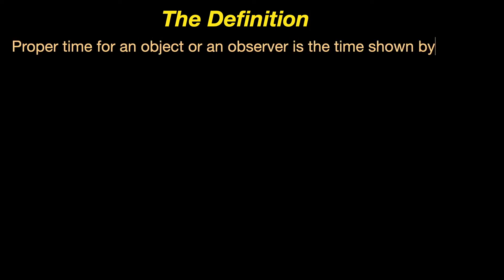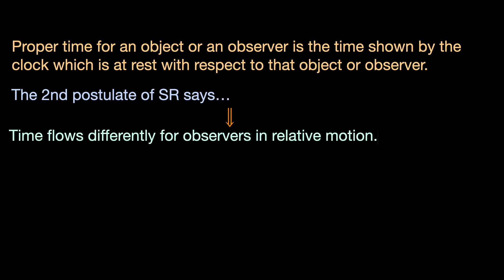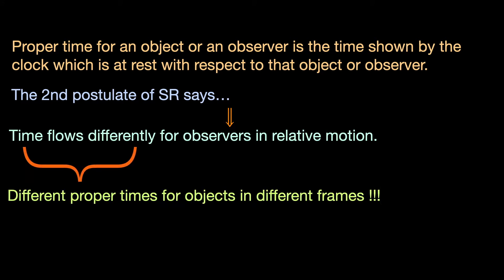Okay, write off the definition. Proper time for an object or an observer is the time shown by the clock which is at rest with respect to that object or observer. When the second postulate of special relativity says time flows differently for observers or objects in relative motion with respect to each other, it is referring to the different proper times of those respective objects or observers.